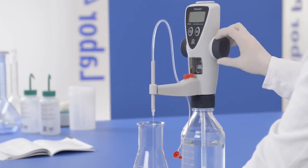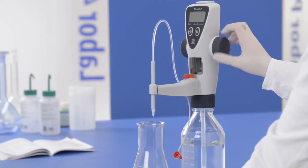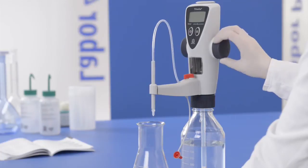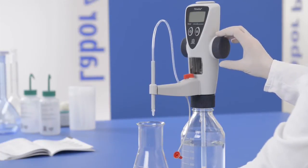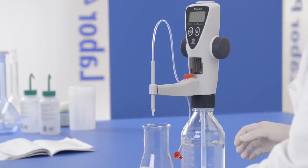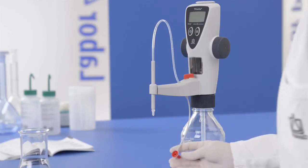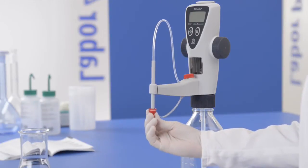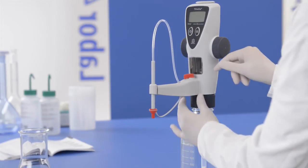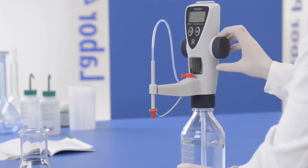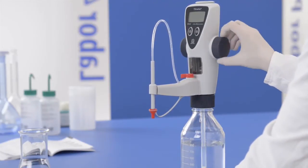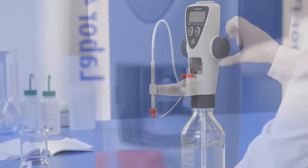Now set the valve to 'Recirculate' and check during filling whether there are air bubbles in the dispensing cylinder. If so, priming will be necessary.